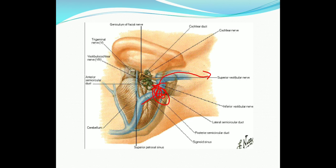The Tobey-Ayer test is similar to the Crowbeck test: applying pressure on the internal jugular vein on the healthy side increases CSF pressure, monitored by manometer. On the affected side, there is no rise in CSF pressure due to the existing block. Additional signs include papilledema and tenderness along the jugular vein if the thrombus extends along it. In summary, the signs are: Grissinger's sign, papilledema, Lilly Crowbeck test, Tobey-Ayer test, and jugular vein tenderness.